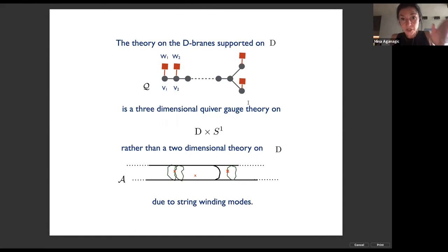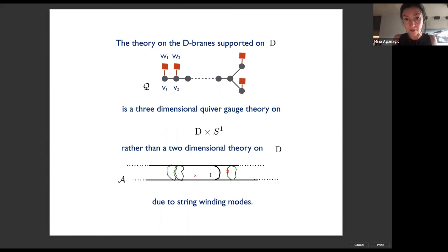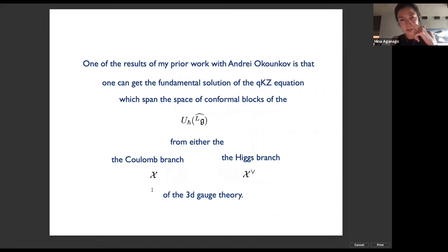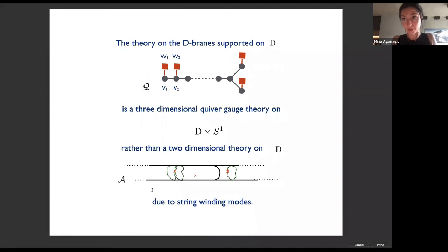The theory on the D-branes turns out to be not a two-dimensional theory but a three-dimensional one — it's a three-dimensional quiver gauge theory on D times the circle. Because (2,0) string theory is a string theory, any D-brane at a point on the Riemann surface — which is a cylinder — will have winding modes that begin and end on the brane and run around the circle. You can trade that description in terms of winding modes for a more natural one making the three-dimensional nature manifest, by T-dualizing. So our theory is a three-dimensional gauge theory on a circle with this quiver.